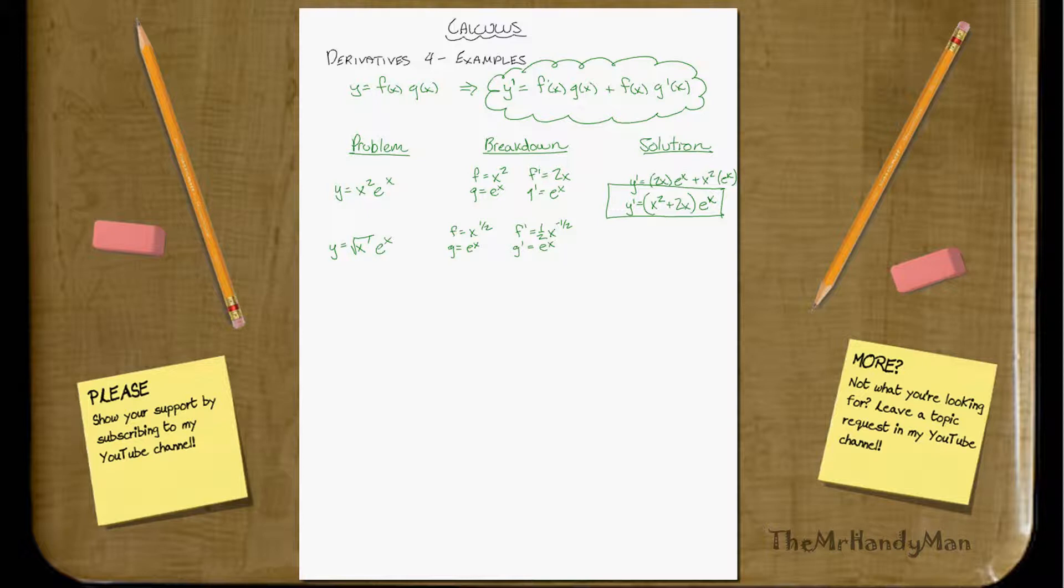Plug and chug, baby. Plug and chug. What's your f prime? That's going to equal 1 half x to the negative 1 half power times the g, which is going to be e to the x, plus, then you have your x to the 1 half power times e to the x.